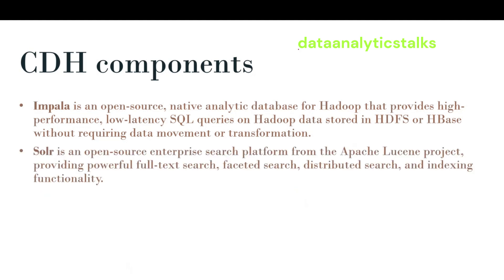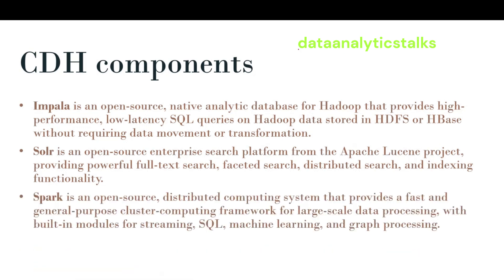Apache Solr is an open-source enterprise search platform from the Apache Lucene project, providing powerful text search, faceted search, distributed search, and indexing functionality. Apache Spark is an open-source distributed computing system that provides a fast and general-purpose cluster computing framework for large-scale data processing, with built-in modules for streaming, SQL, machine learning, and graph processing.